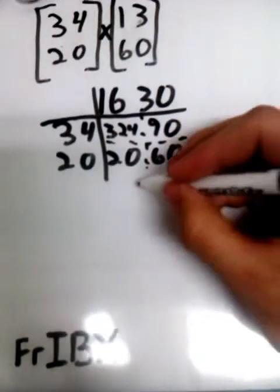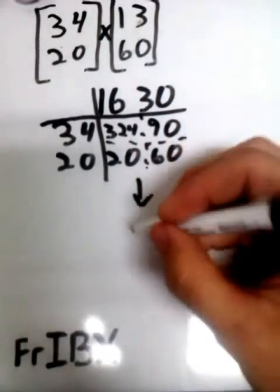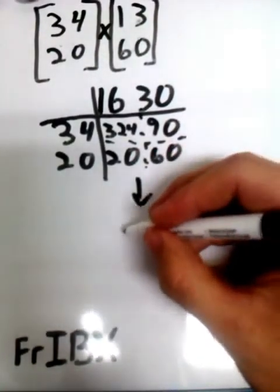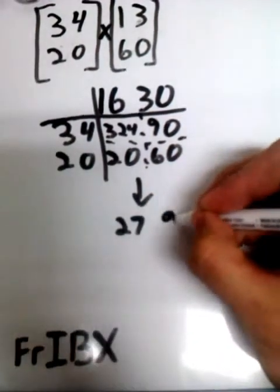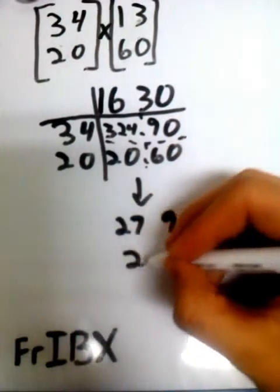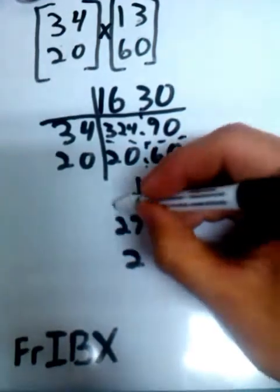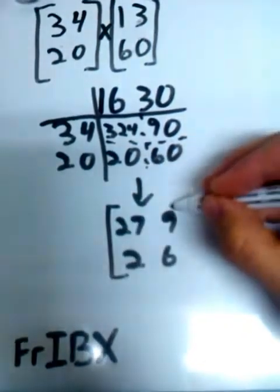So now we have all of these cells filled up. We're going to take these and we're going to add up all the numbers inside each cell. So we get 27, 9, 2, and 6. And that's our product matrix.